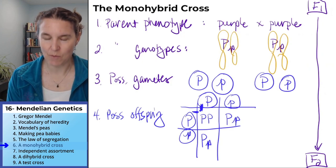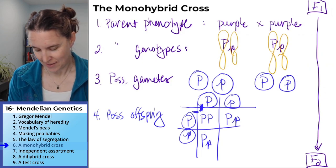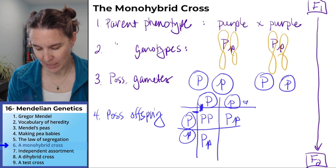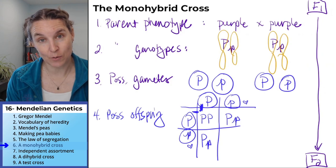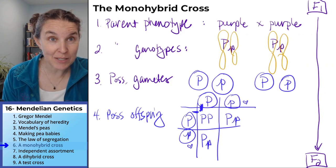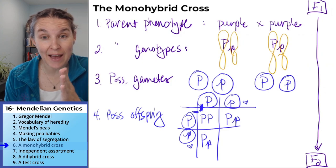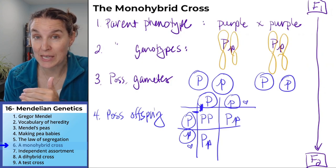And here, if this little p combines with that little p, half the gametes from mom have little p's, half the gametes from dad have little p's.